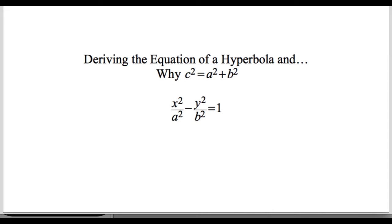In this video we're going to be deriving the equation of a hyperbola and we're going to take a look at why c squared equals a squared plus b squared. The standard equation of a hyperbola is x squared over a squared minus y squared over b squared is equal to 1.